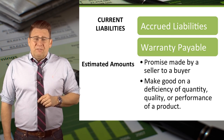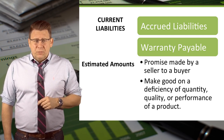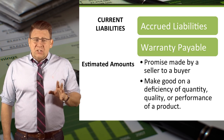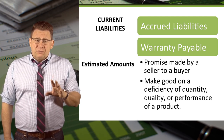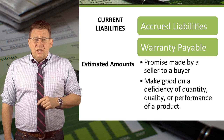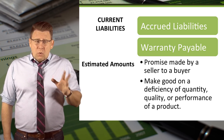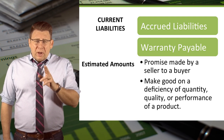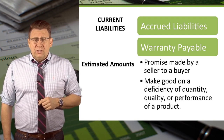Another example of estimated liabilities is product warranties. Warranties are promises sellers make to buyers that protect buyers for a certain period of time against deficient quality, quantity, or performance of a product. More about warranties when we learn about contingent liabilities.